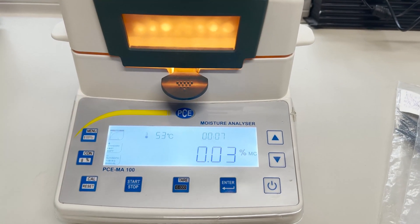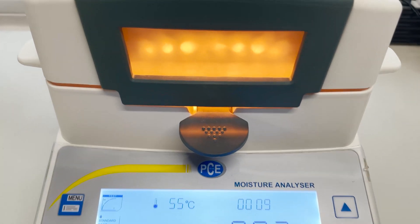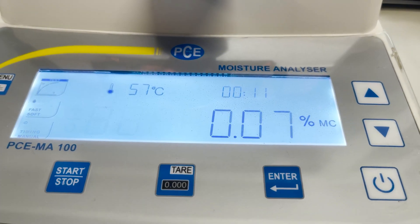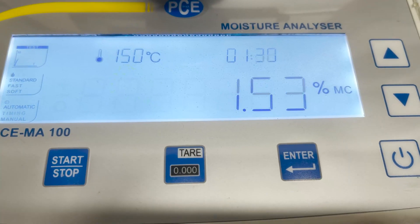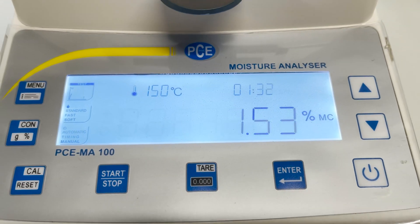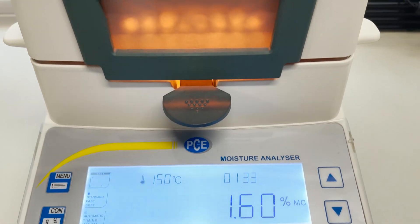The oven measures the moisture content and displays the result on a screen. Using these results, we can guarantee the correct moisture content in our cable ties.